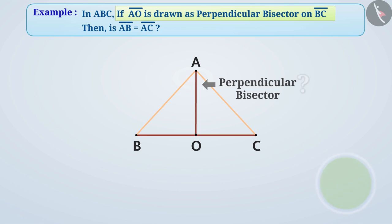Let us tell you. It means that line segment AO makes right angle with line segment BC and also bisects BC in two equal parts. So by this, O is midpoint of BC.